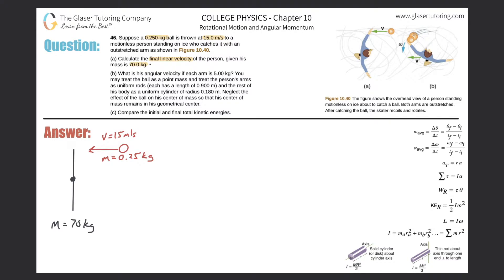We need to find final values given initial conditions — the person is initially at rest and the ball's initial velocity is 15 meters per second. The key idea is conservation principles. Since part A involves linear motion, we apply conservation of linear momentum: p_i equals p_f.